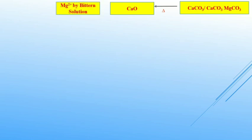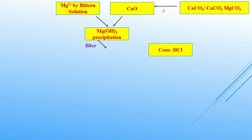Then calcium oxide is treated with magnesium 2+ ions by bittern solution. And then magnesium hydroxide precipitation will form and we have to filter the magnesium hydroxide precipitation. After that, we have to filter it with concentrated hydrochloric acid. Then dry up to 16% of water and then magnesium chloride 2H2O will form.